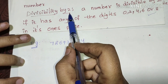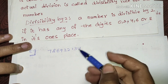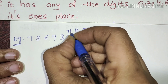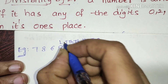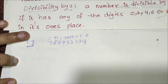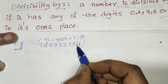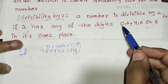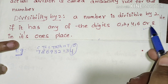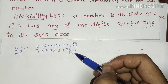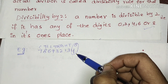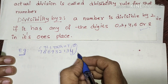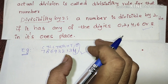When using the divisibility by 2 rule, we look at the place values: ones, tens, hundreds, thousands, ten thousands, lakhs, ten lakhs, crore, ten crore. The key is the ones place digit — if the ones place digit is 0, 2, 4, 6, or 8, the number is divisible by 2.